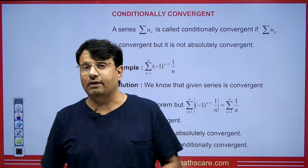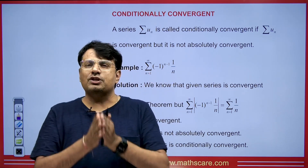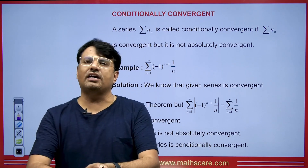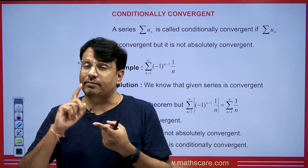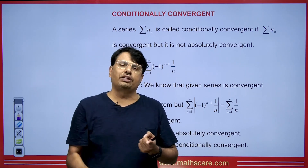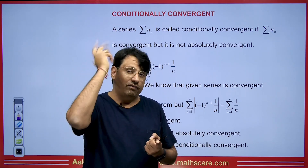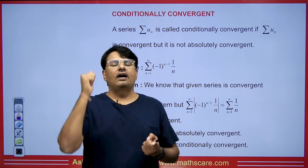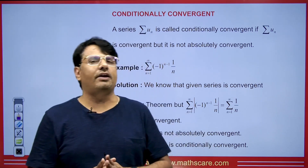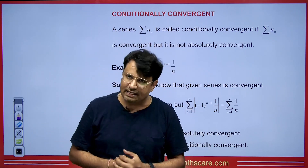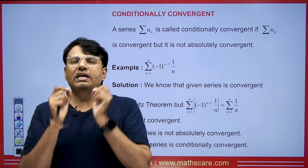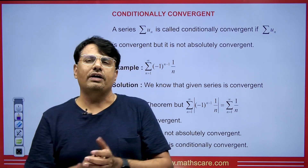I am going to discuss another topic which is about alternating series — whether that series will be conditionally convergent or not. I have already told you the concept of the Leibniz theorem in the alternating series, where after applying it we check if it is convergent or not, or if we have any alternating series, whether it is absolutely convergent or not. You can check out that video. Today I am going to tell you about whether an alternating series will be conditionally convergent or not.